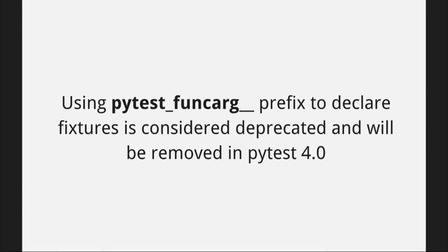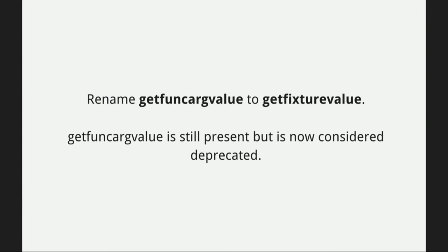Deprecations: pytest_funcarg was a way to define fixtures — we deprecated this and it will be removed in the next major release. There is get_funcarg_value from the special request fixture — we renamed that to get_fixture_value because it's more telling about what it actually does. It takes your fixture by name and gives you the value it returns. The old name is still in the code base so it won't be fully deprecated for now.